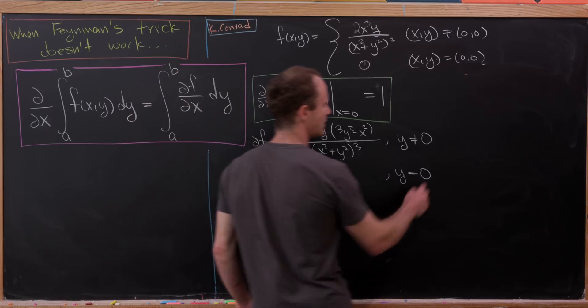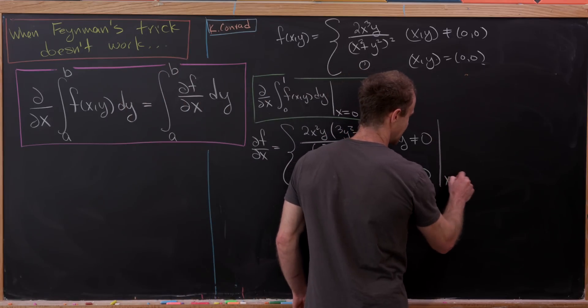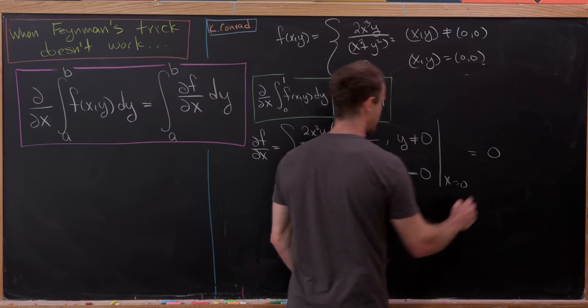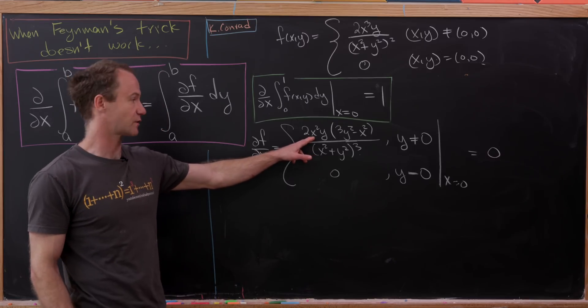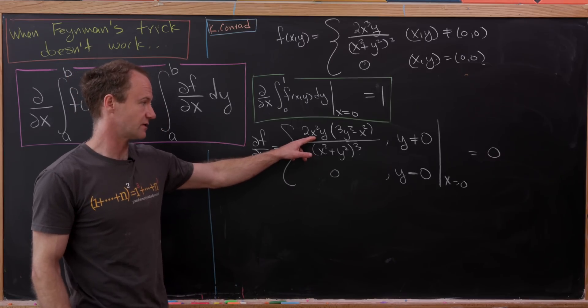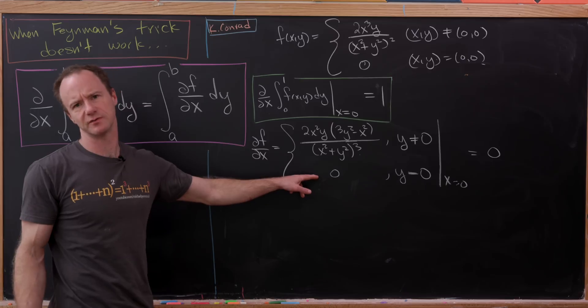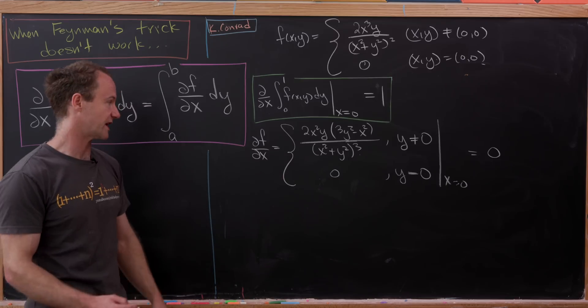But now let's notice if we plug in x equals 0 to this, we simply get 0 because we've got a multiplier of x squared. So it's equal to 0 even when y is equal to 0.